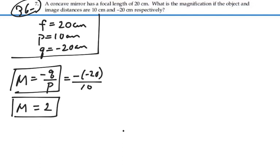So the image should be twice the size of the object and it should be upright because our magnification is positive.